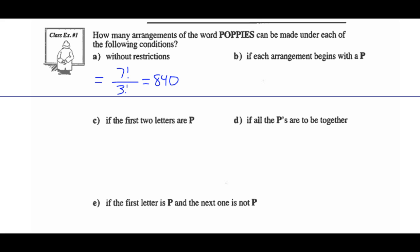Part B — how many arrangements begin with a P? If the arrangement begins with a P, there are 3 P's to choose from. Then there are 6 letters left, which can be arranged in 6 factorial ways. Now divide out the like elements — all those P's are the same, so divide by 3 factorial. So 3 times 6 factorial over 3 factorial gives us 360 ways.